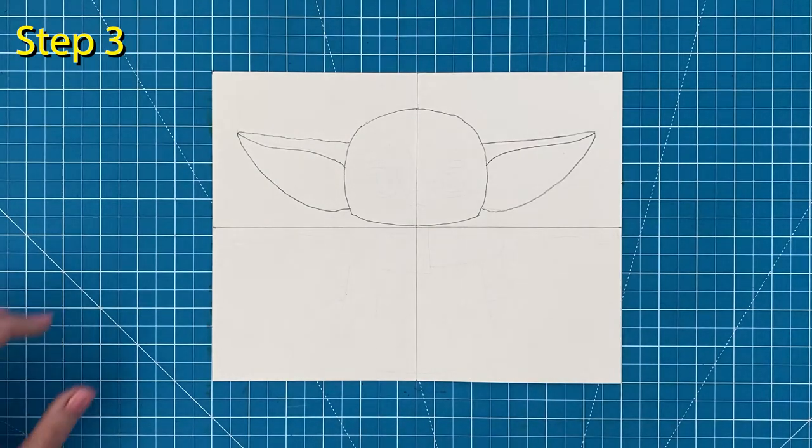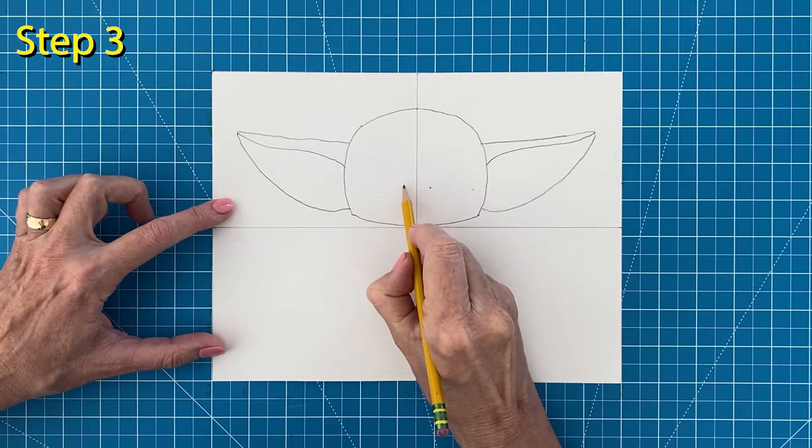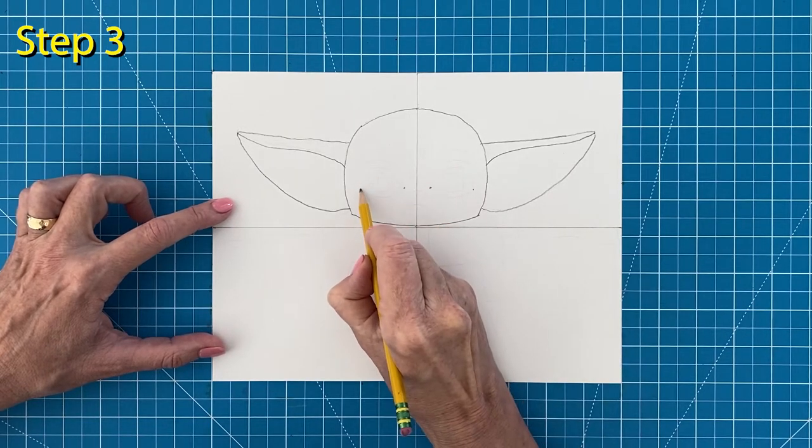Step number three, start the plan for the eyes by making four dots. They represent the inside and outside corners of the eyes.